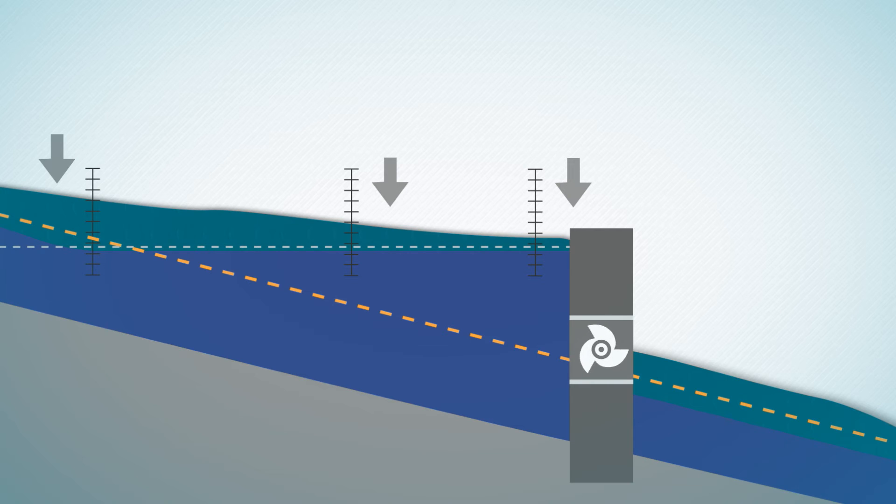Every power plant has a design discharge, which is the maximum amount of water that the turbines can process in order to generate electricity. If this amount of water is surpassed, weirs must be opened in order to manage the additional discharge from the impoundment area.